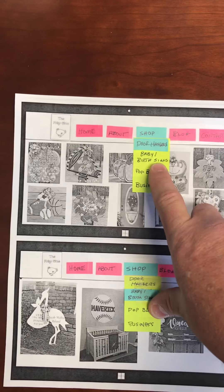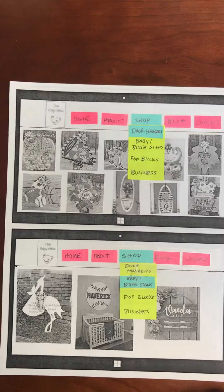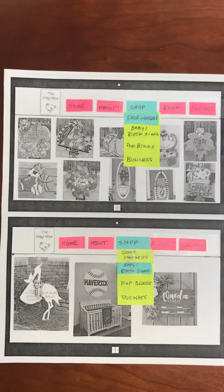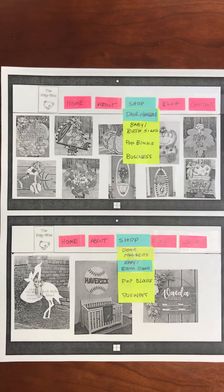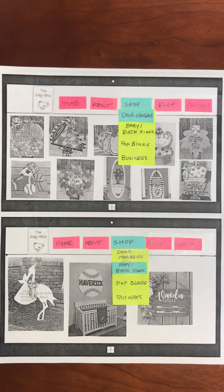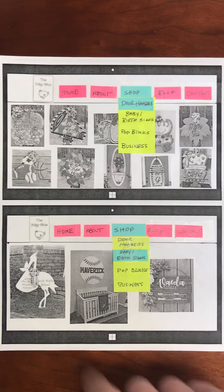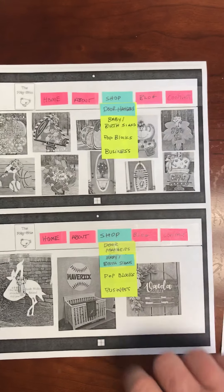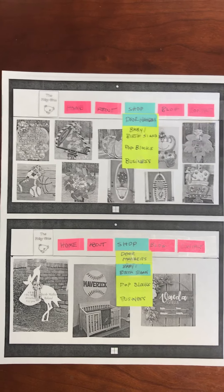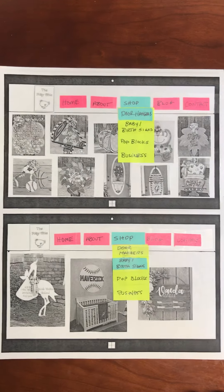Moving through the dropdown, we would click on baby birth signs. These are products the seller has available for birth announcements and signs for either a hospital room or a baby room, something of that nature. You would see the products here, and all these products would have price points noted on them for purchase from the website.